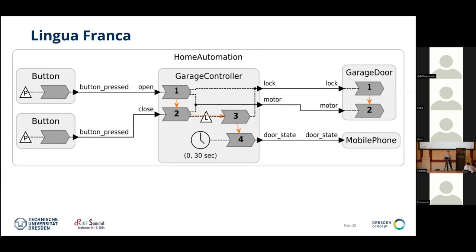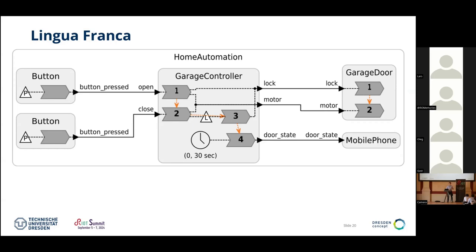Here's how we expand this to our garage example. We have our garage door on the right, two buttons on the left, and a controller that controls it all. Lingua Franca has support for timers — if you want to trigger events periodically, in this case every 30 seconds. You also have logical actions to schedule events into the future — for example, reaction 2 can say it wants to trigger reaction 3 via a logical action in 2 hours.